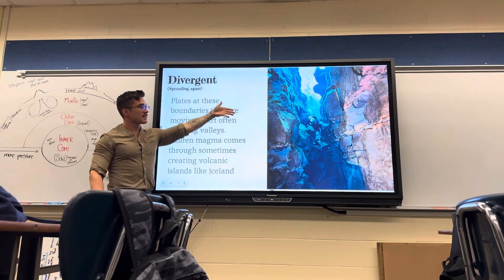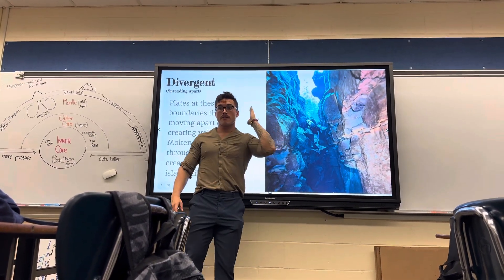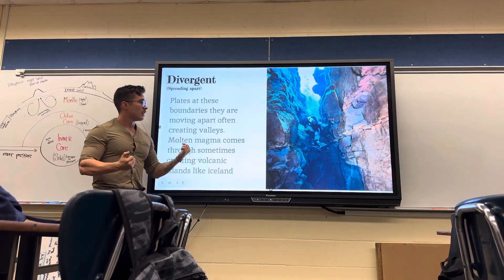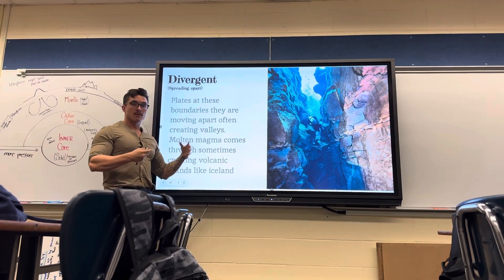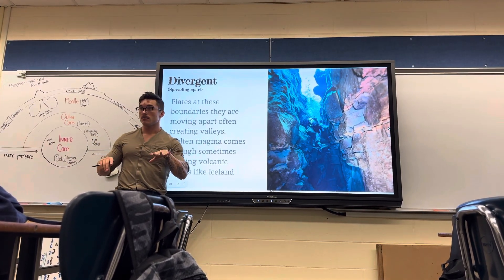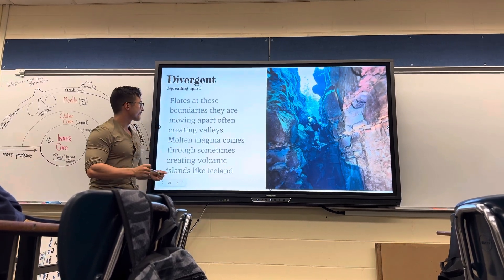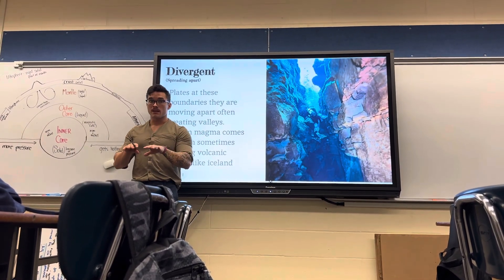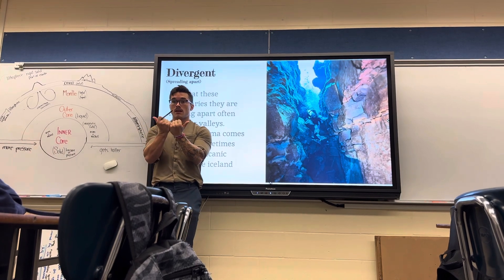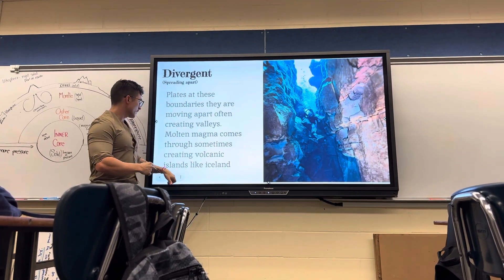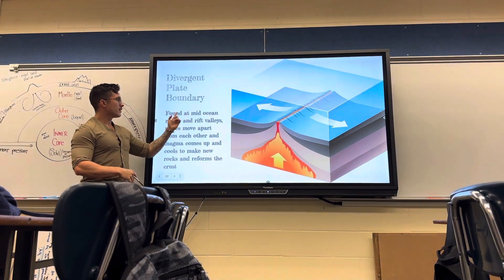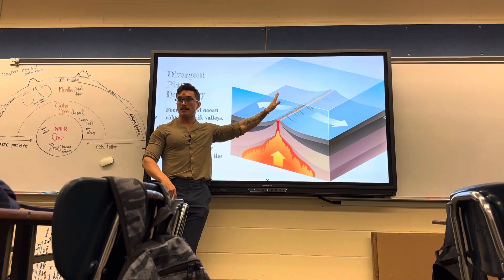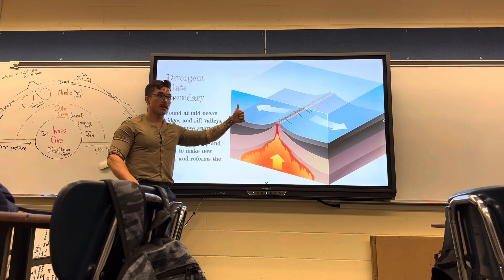Divergent boundaries are where plates spread apart. This is actually a picture from Iceland - Iceland has a divergent plate boundary running through the entire country, so the country is literally splitting in half. But remember, plates don't move that fast - they move about the speed your fingernails grow, so not very much per year. If there's a divergent boundary on land instead of underwater, it usually makes a valley in the middle. Mid-ocean ridges and rift valleys form where plates move apart and magma comes up, forming new baby rock at divergent boundaries.